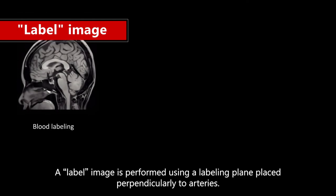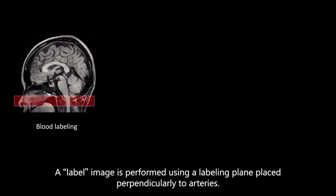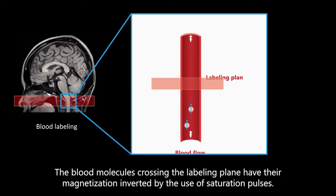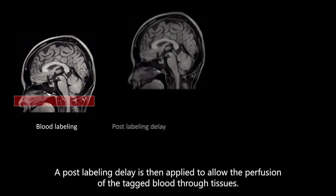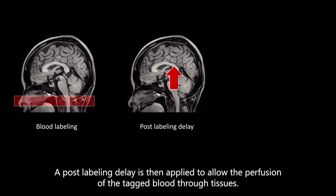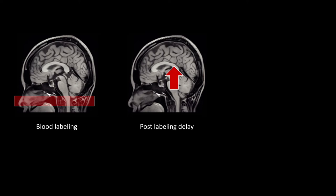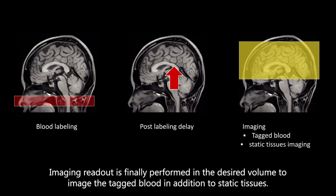A labeled image is performed using a labeling plane placed perpendicularly to arteries. The blood molecules crossing the labeling plane have their magnetization inverted by the use of saturation pulses. A post-labeling delay is then applied to allow the perfusion of the tagged blood through tissues. Imaging readout is finally performed in the desired volume to image the tagged blood in addition to static tissues.